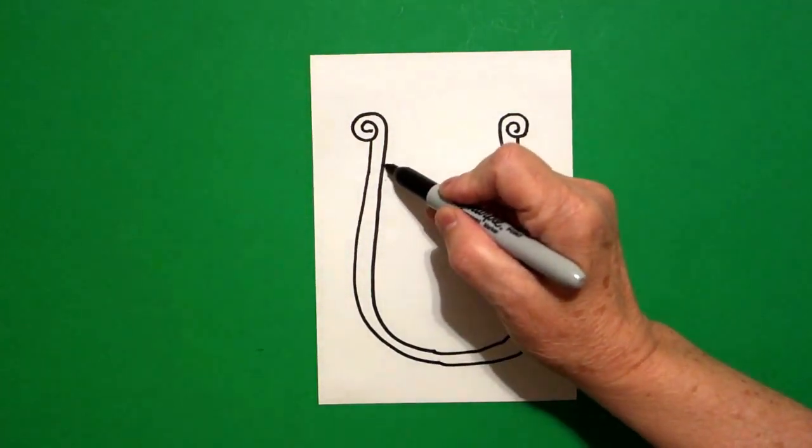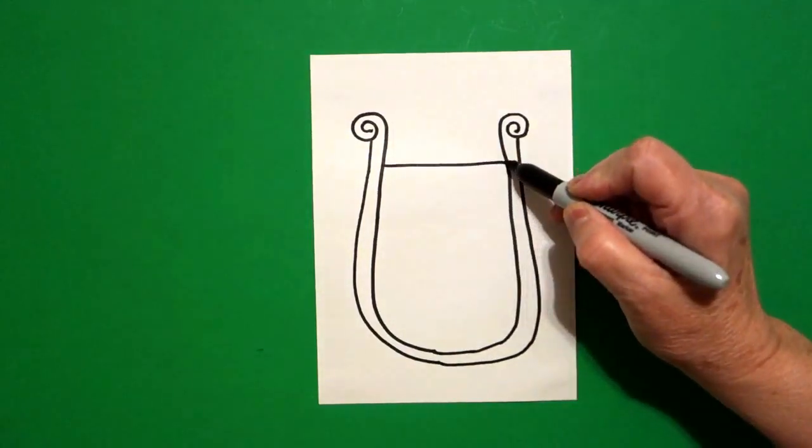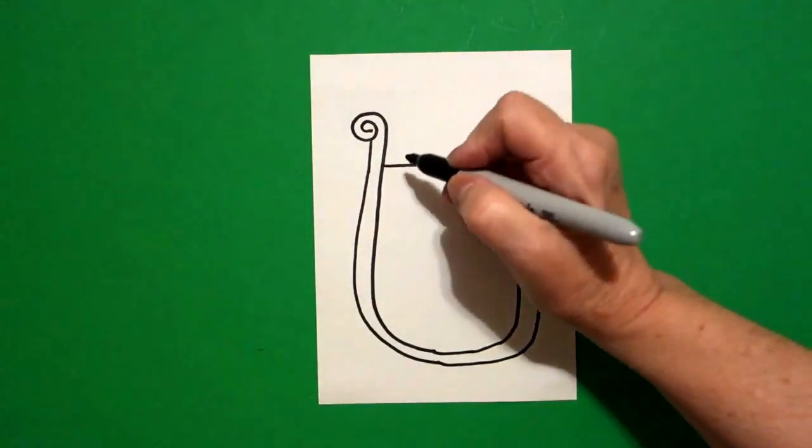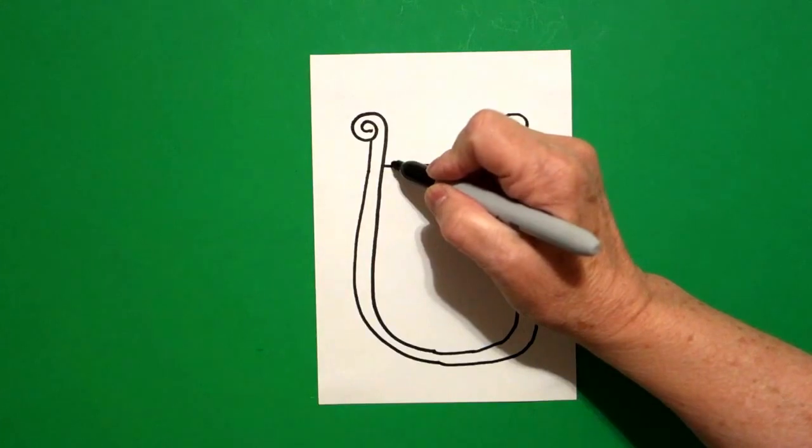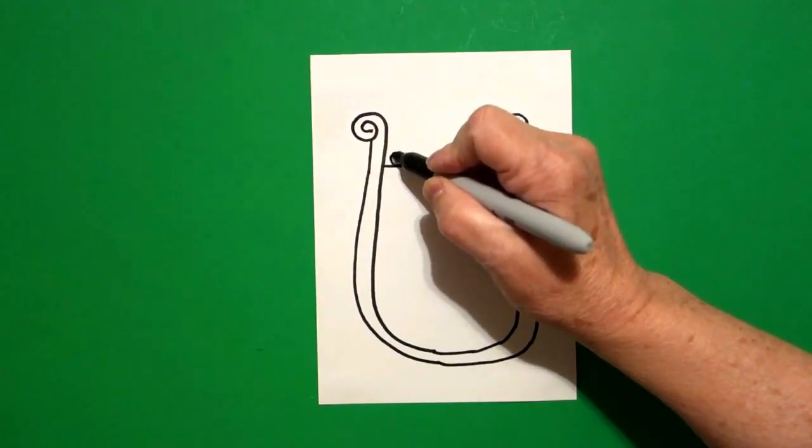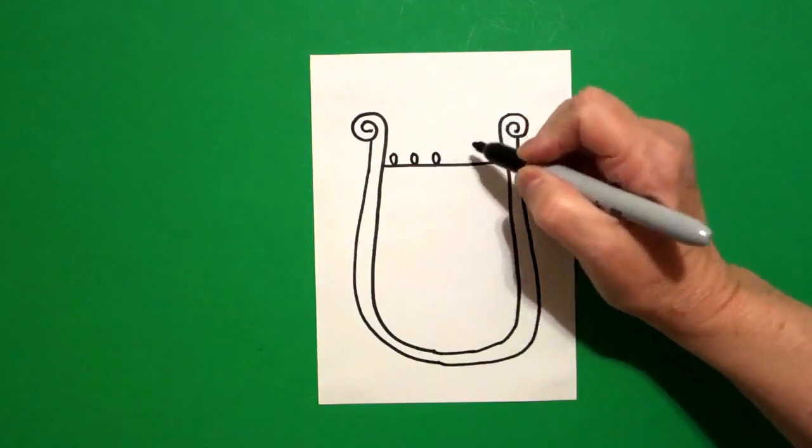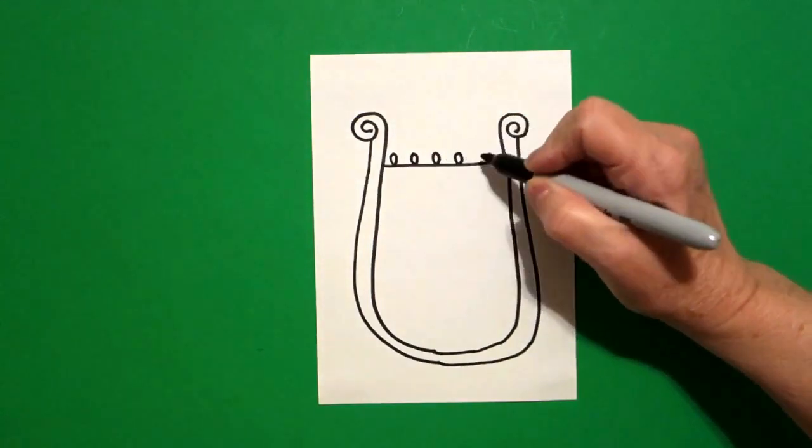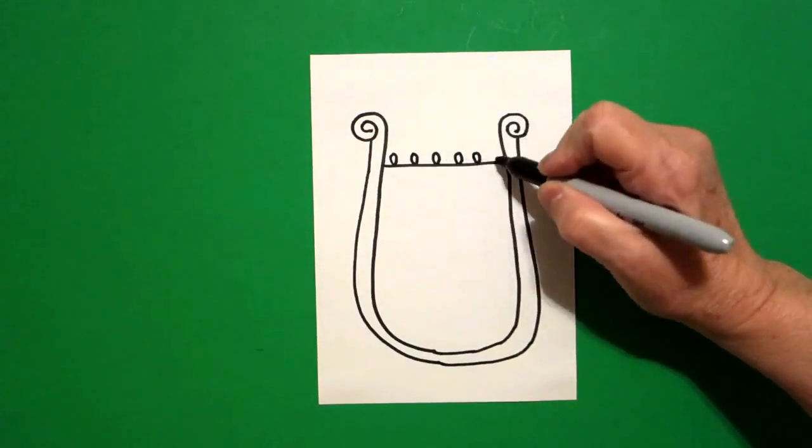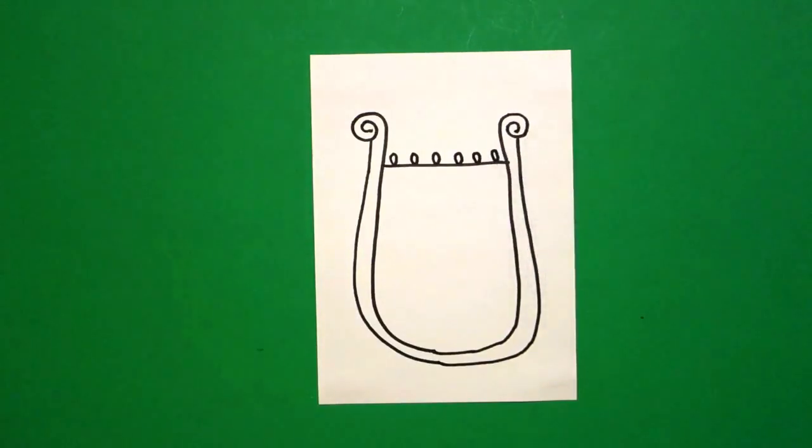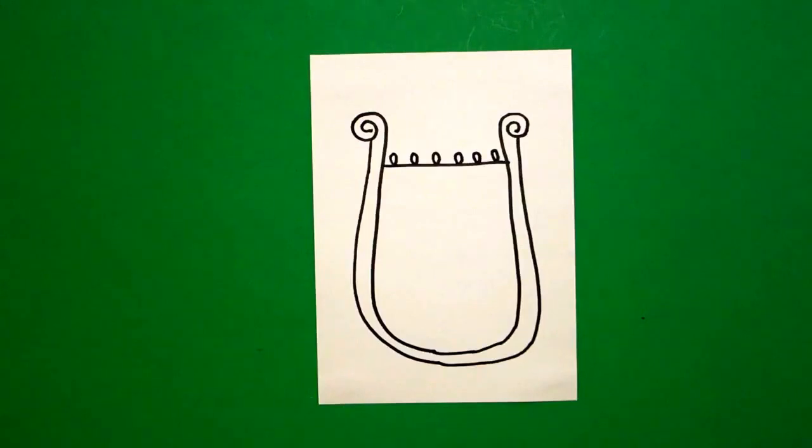Right about here, I'm going to draw a straight line across and connect. Now on top, I'm going to draw some little closed loops. So, I go one, two, three, four, five, six. Because we all draw differently, some of you might have more loops, some of you might have less, but going across from left to right.